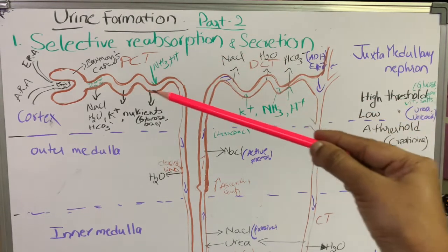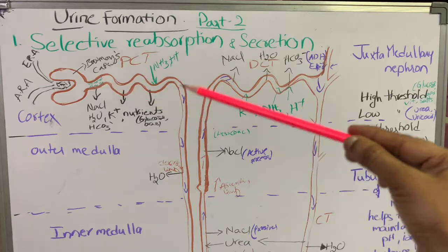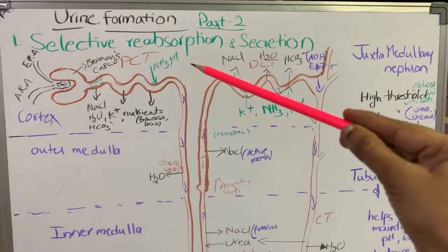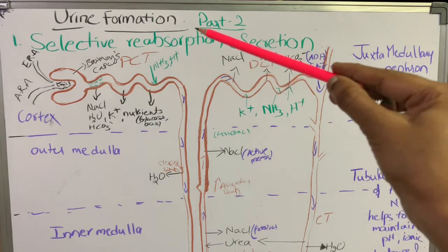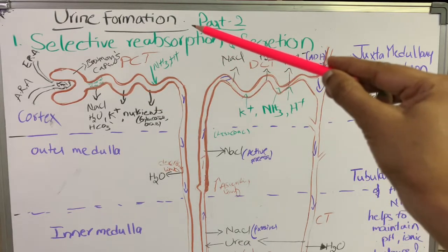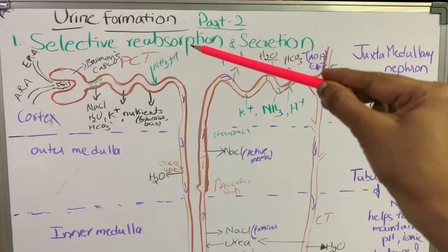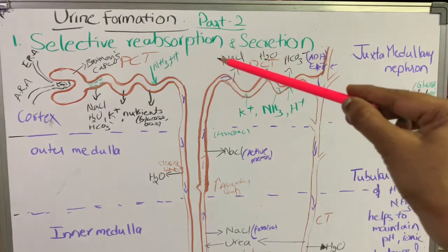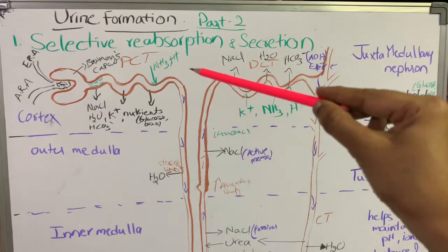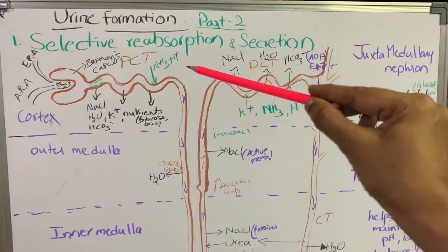In the proximal convoluted tubule, the tubular cells also secrete ammonia and H+ ions into the filtrate. This process is known as secretion.